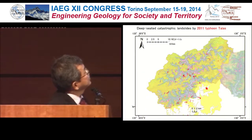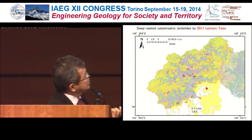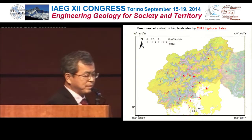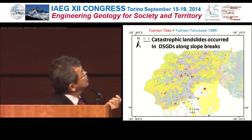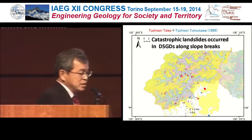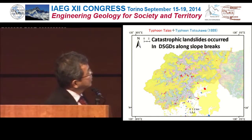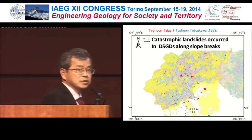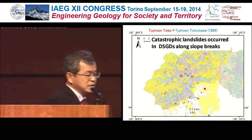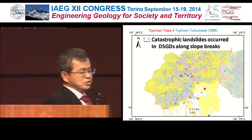This slide shows the catastrophic landslides from Typhoon Talas in red. We see that those occurred on gravitationally deformed slopes. In 1889 there was also a big rainstorm, and landslides from that event are indicated in blue. Those blue landslides also occurred on similar slopes. So catastrophic landslides occur in deep-seated gravitational slope deformations along slope breaks.